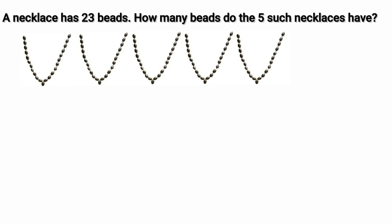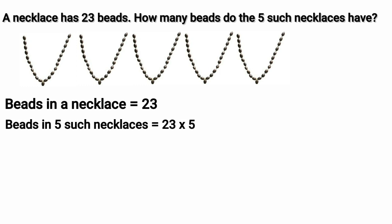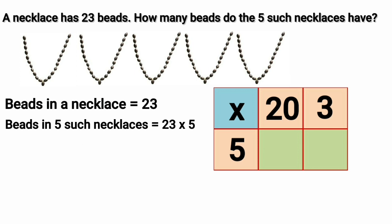But we have another method — an easy one to solve this. Beads in a necklace is equal to 23. To find the number of beads in 5 such necklaces, we will multiply 23 with 5. We will split 23 as 20 plus 3 and write it in a grid.